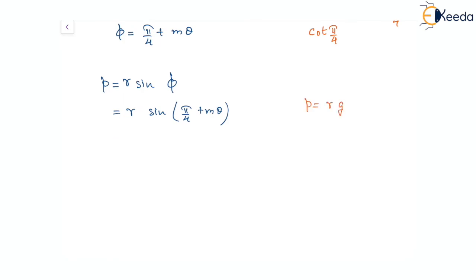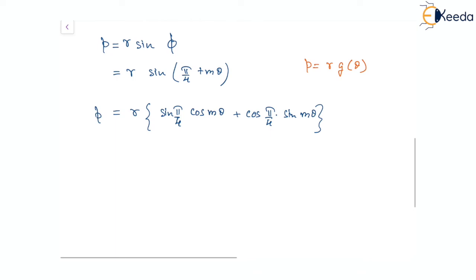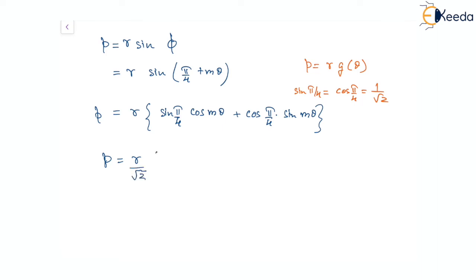Since we want p in terms of r (to eliminate θ), let us expand the right side. Expanding, this gives r times (sin(π/4)cos(mθ) plus cos(π/4)sin(mθ)). This is p. The values of sin(π/4) and cos(π/4) are both 1/√2, so they can be factored out as 1/√2, giving p equal to r divided by √2 times (cos(mθ) plus sin(mθ)).